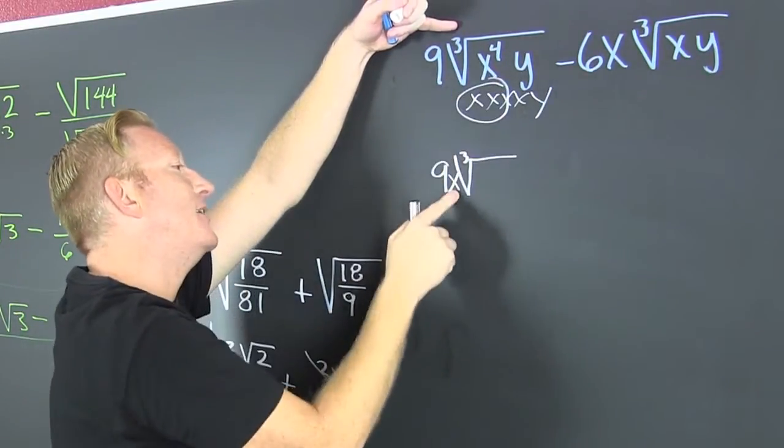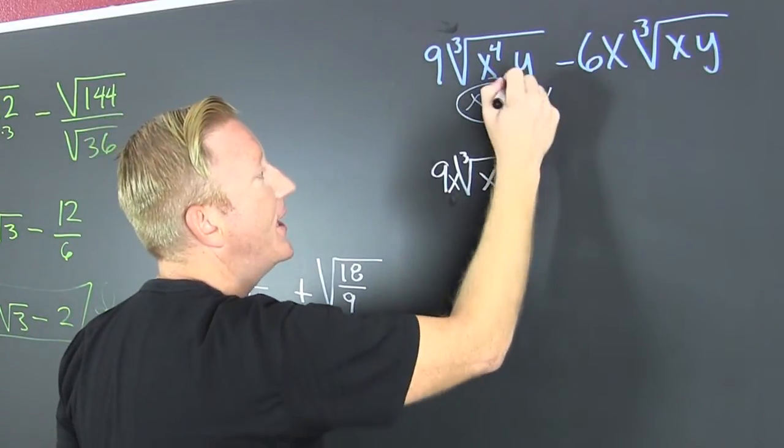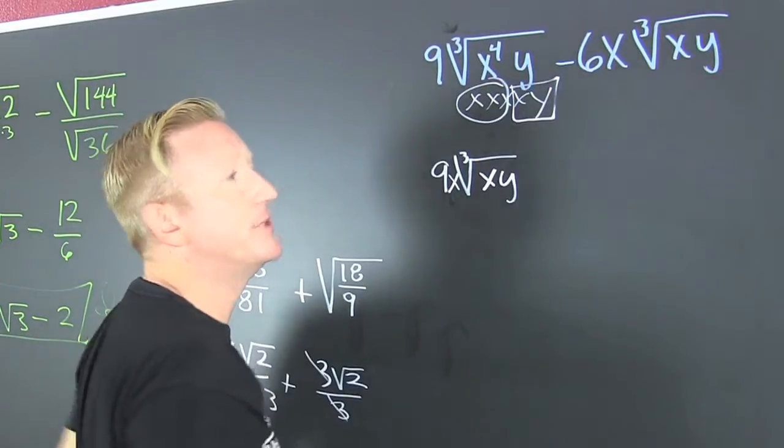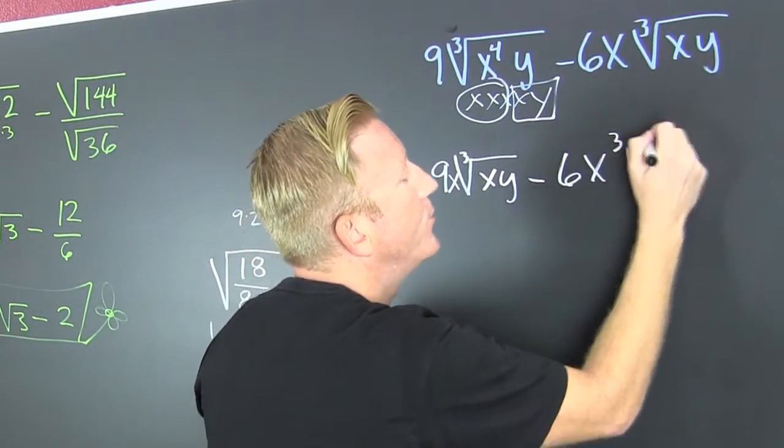And then I have an XY inside because that's the stuff left in the root, it didn't have a pair. So then this is minus 6X³√(XY).